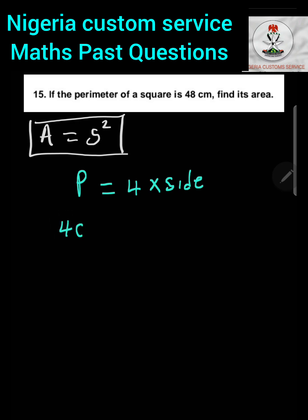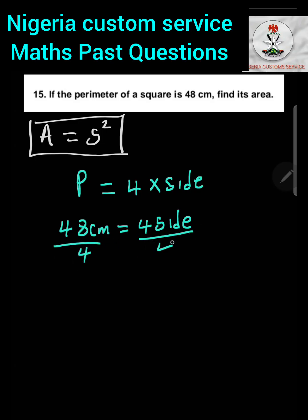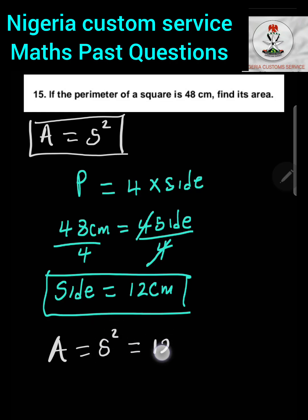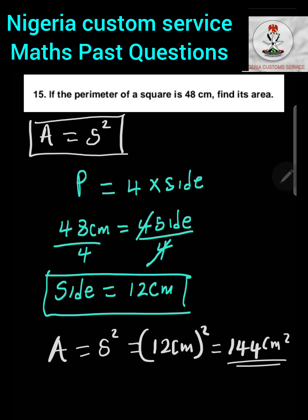Substituting the perimeter: 48 equals 4 times side. Dividing both sides by 4 gives side equals 12 centimetres. Now substituting into the area formula: area equals 12 squared, which gives 144 square centimetres. Therefore the area of the square with perimeter 48 centimetres is 144 square centimetres.